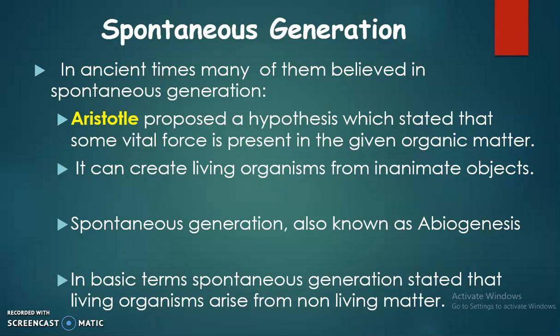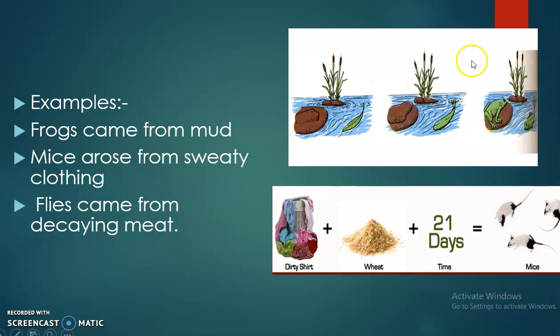Some examples are given here: frogs coming from mud, mice coming from dirty shirts or dirty cloths, and flies came from decaying meat. These are some of the observations in spontaneous generation theory.